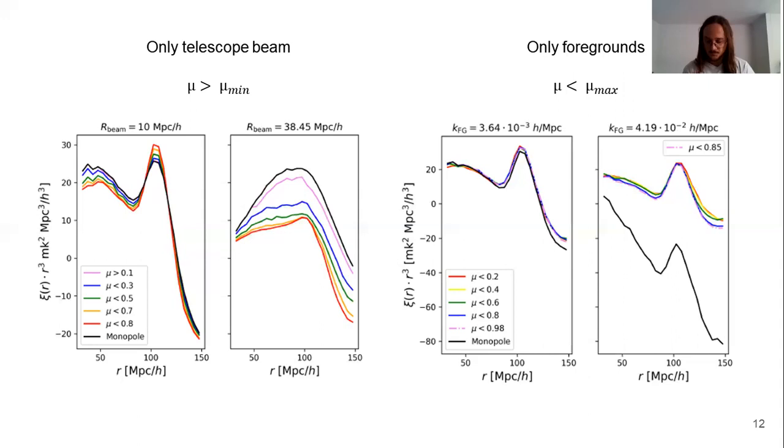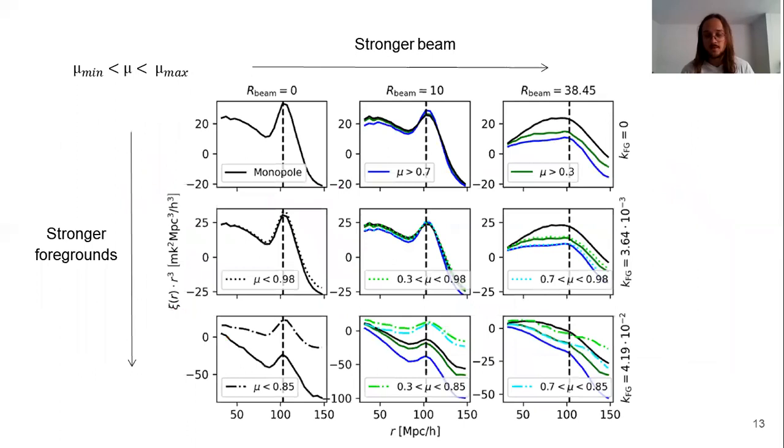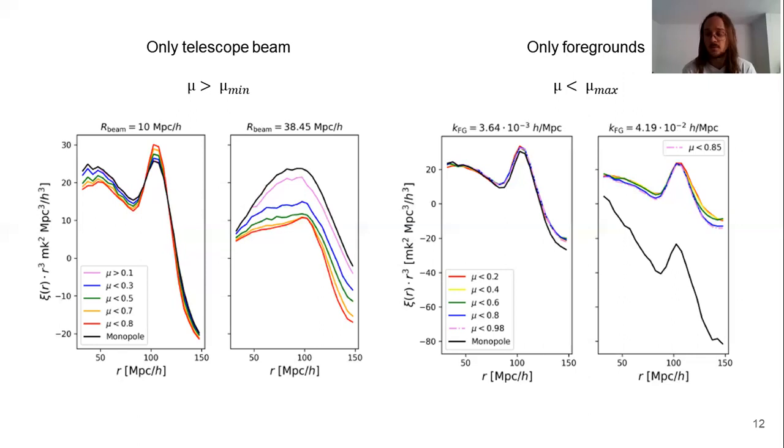On the other hand, higher cuts are not recommended because we are eliminating a great part of the signal, bringing down the signal to noise. And the figure on the right is analogous, but now we are only considering the foreground removal. The damping that is produced by the exponential suppression lowers the function, but fortunately it does not change greatly the shape of the mu wedge correlation function.